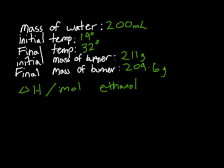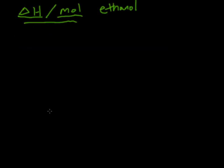Alright, so there's a few things we've got to find out here. My approach is to just go ahead and find them separately. First we can find the total ΔH of the system, then we can find the number of moles of ethanol, and then divide one by the other to get our final result.